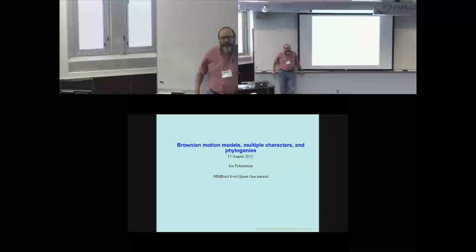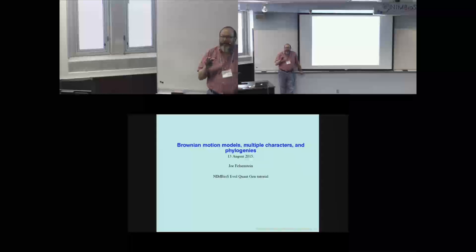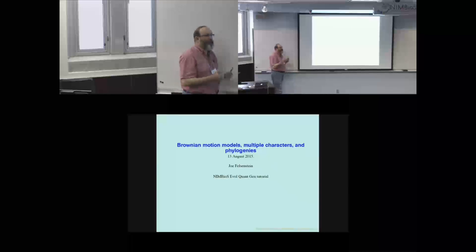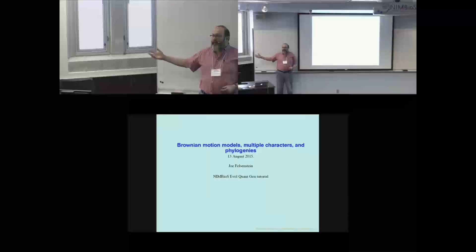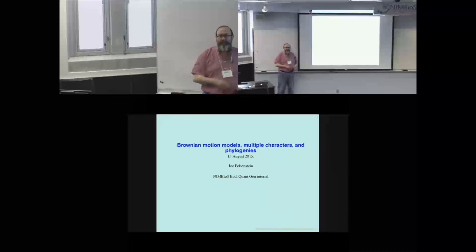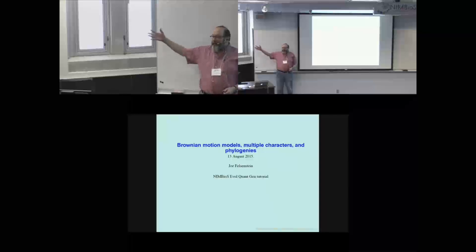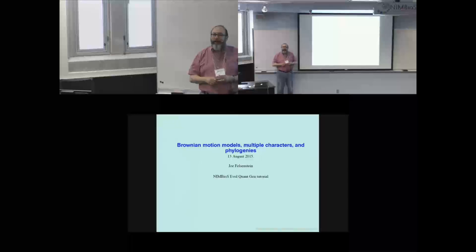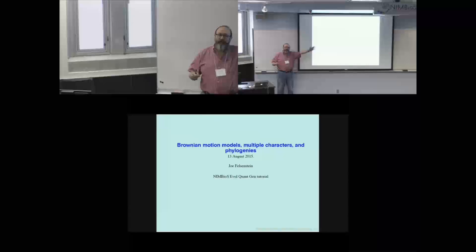I wanted to start out by talking about Brownian motion. Where we are in the course is at a critical moment — it's the weak point of the course, because up until now you've heard from Steve and Adam and Mike Whitlock about quantitative characters evolving within natural populations. Now we get beyond the boundary of the species and we start talking about multiple species.